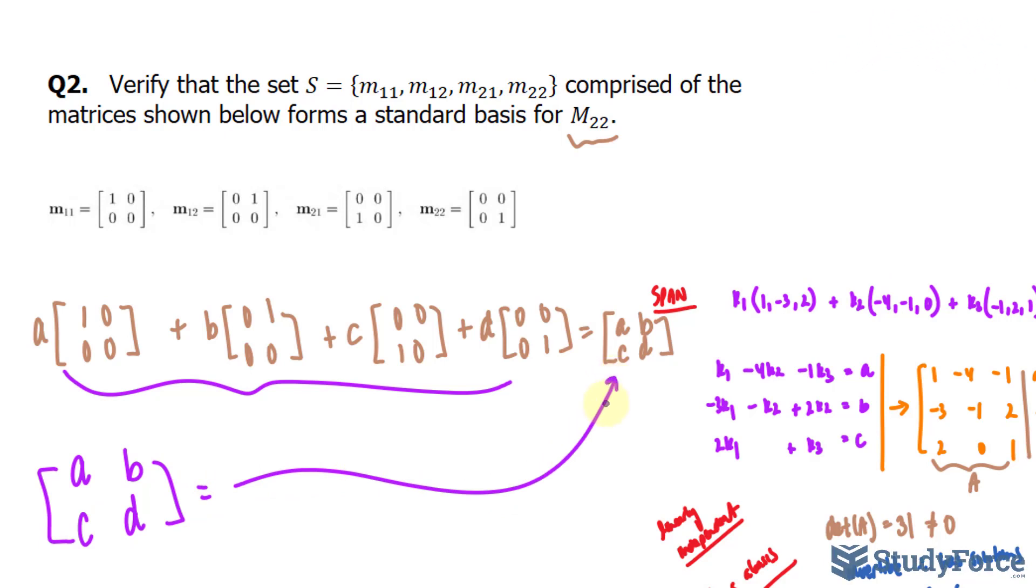But we also have to prove that they're linearly independent. For that, rather than use A, B, C, and D, I'll replace them with a zero matrix. So all of these elements will be zeros as opposed to unknowns.